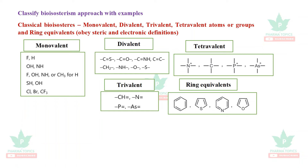Classify bioisosteres with examples. The first category is classical bioisosteres: monovalent, divalent, trivalent, and tetravalent atoms or groups, and ring equivalents. Monovalent bioisosteres: fluorine can be substituted with hydrogen; hydroxyl group can be substituted with NH or SH; thiol can be substituted with OH; chlorine can be substituted with bromine — they have similar electronic features and valency.